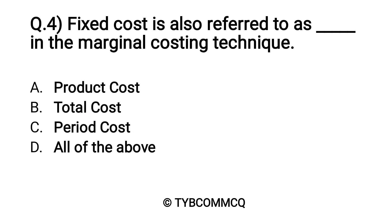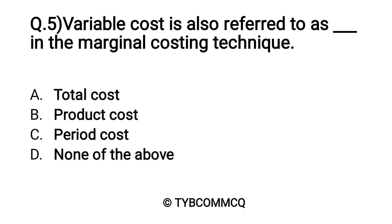Question number four: Fixed cost is also referred to as dash dash in the marginal costing technique. Option A: product cost, Option B: total cost, Option C: period cost, and Option D: all of the above. Yes, Option C is the correct answer.